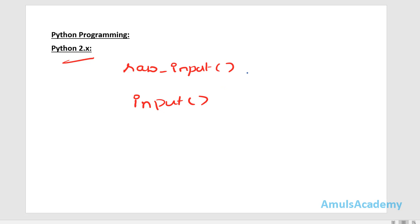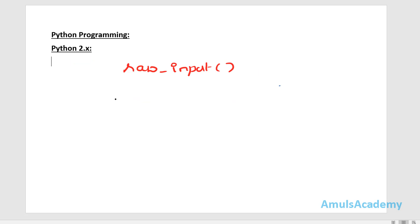If both functions do the same work, then there should be a difference between them, and today we are discussing that. The raw_input function in Python 2 is used to get input from the user. It takes exactly what the user typed and passes it back as a string — meaning if you enter an integer value, it will still treat that as a string.